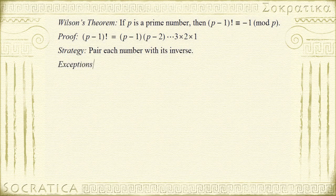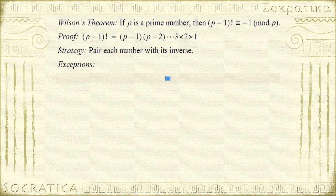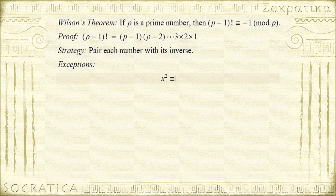But there are a few exceptions. The exceptions are there are some numbers that are their own inverse. So let's see which ones those are. If a number is its own inverse, that means it's a solution to x squared is congruent to 1 mod p.